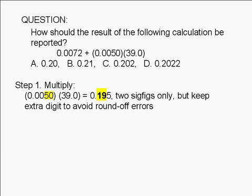Since there are two significant digits in 0.0050 and three significant digits in 39.0, the rule for multiplication and division says that we should round off to the same number of significant figures as the term with the fewer number of significant figures. However, we keep an extra digit when we carry this intermediate result over to another calculation.